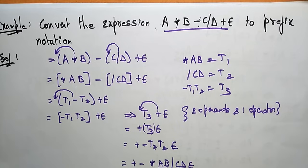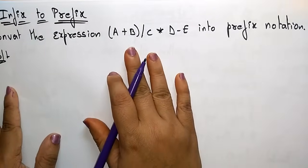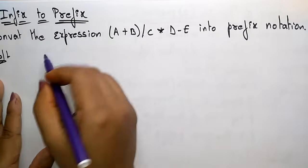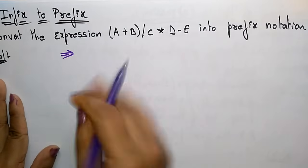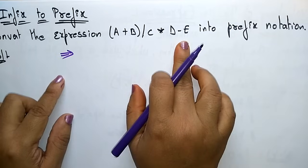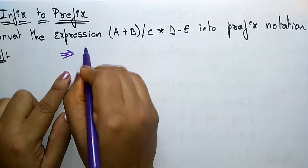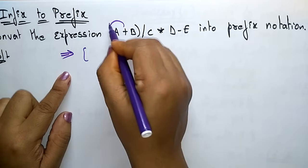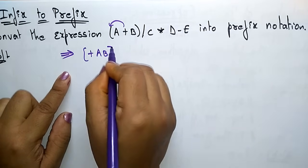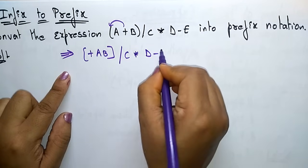Let me take one more example so that you get a clear idea of the conversion of infix to prefix. The expression is: A plus B by C star D minus E. Here parentheses are already present, so directly apply the prefix notation: plus A B, division C, star D, minus E.